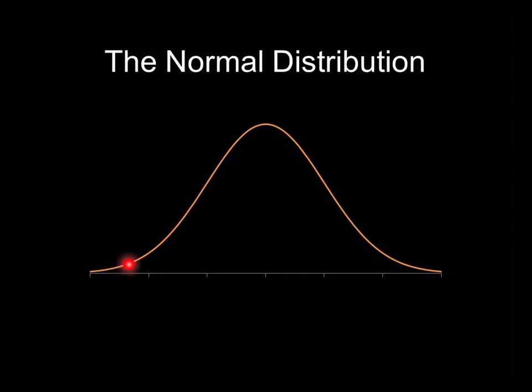So the normal distribution, the normal curve, or the bell curve as it's sometimes called, because it kind of looks like a bell, is simply a figure that displays a range of scores from very, very low scores to very, very high scores.